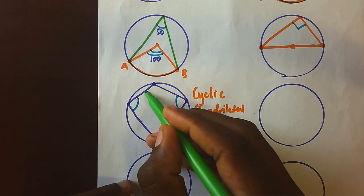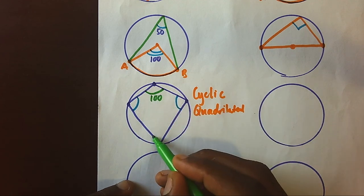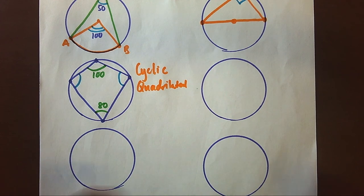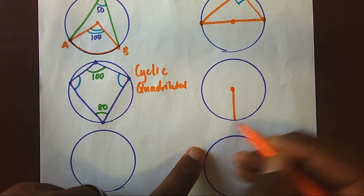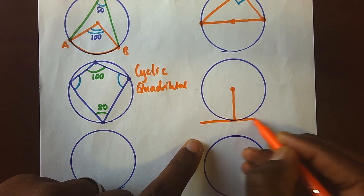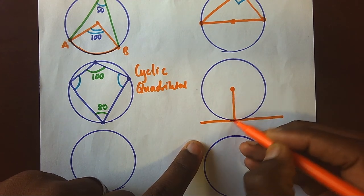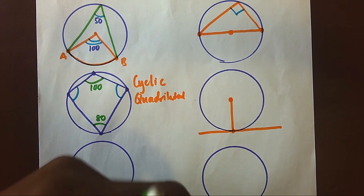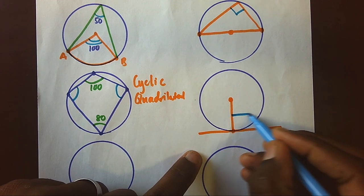If this angle is 100 degrees, automatically its opposite angle should be 80 degrees. Another law states that if you have a radius or diameter in contact with a tangent — that means a radius meeting the tangent at the circumference — the law states that when a radius is in contact with a tangent, they will always form a right angle.